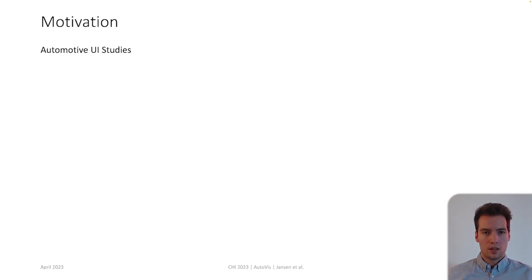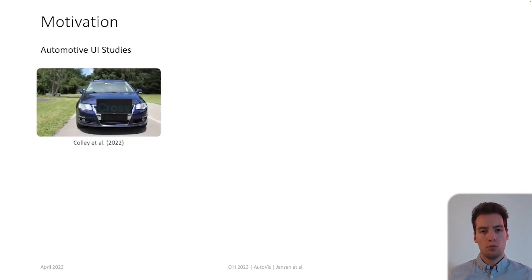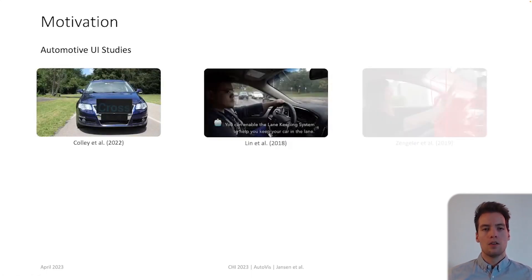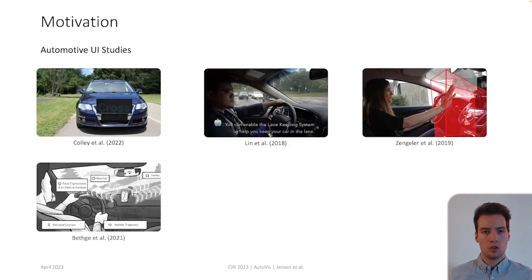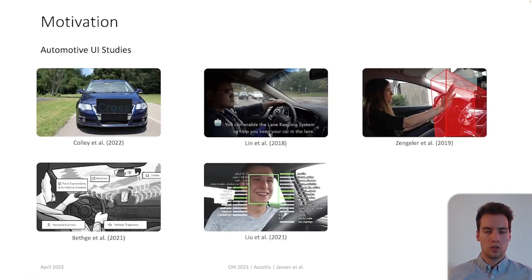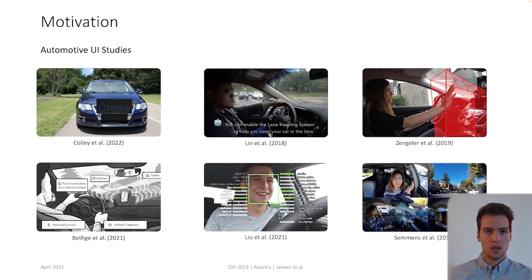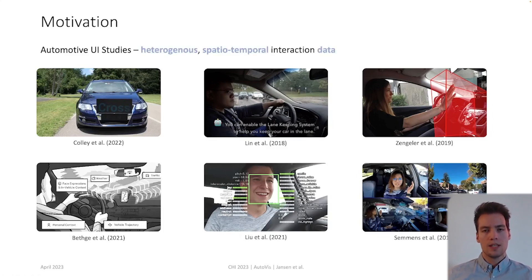Today's automotive UI studies often consider numerous factors such as interaction with external HMIs, novel input and output modalities like speech and gesture, environmental context, passenger physiology and temporal sequence of interactions. Consequently, practitioners gather large quantities of heterogeneous spatial-temporal data of movements, interactions, audio and video recordings, making human-vehicle interaction analyses more complex.